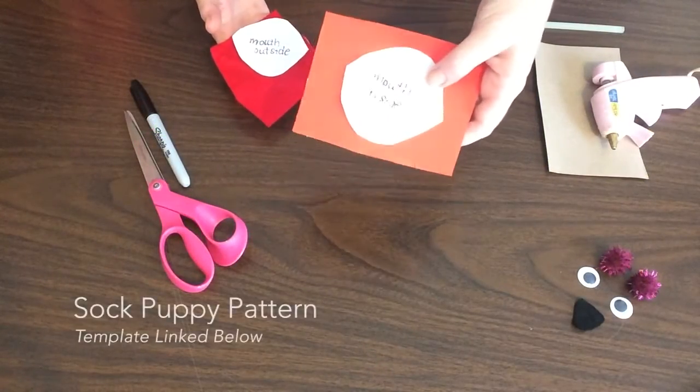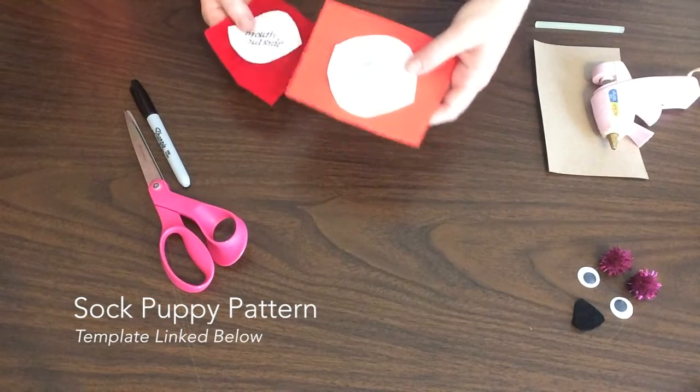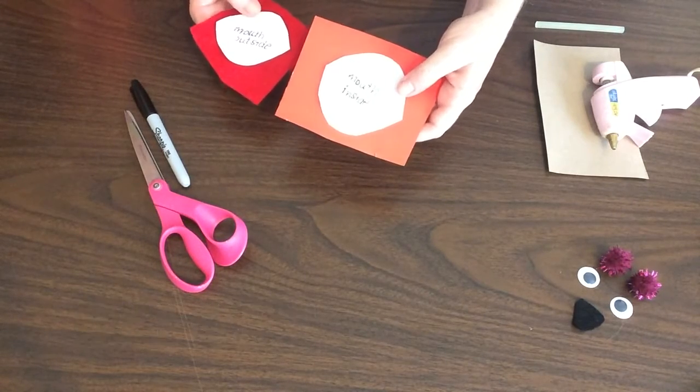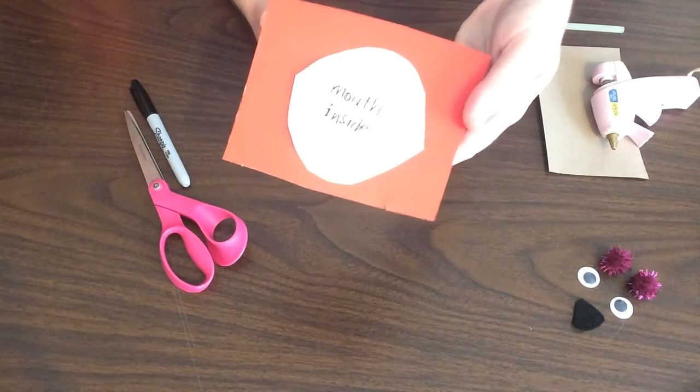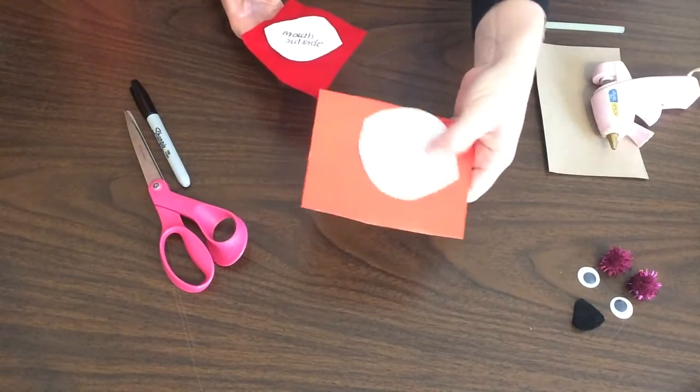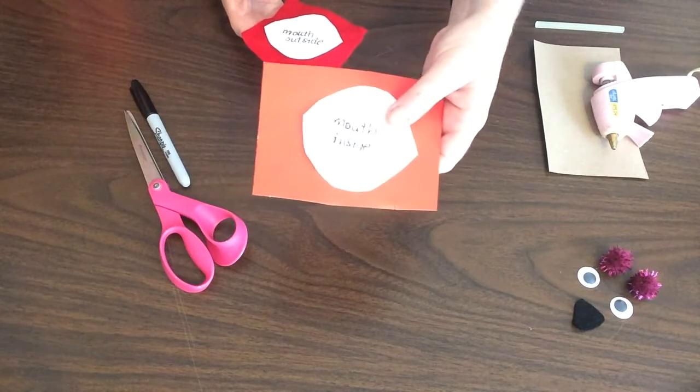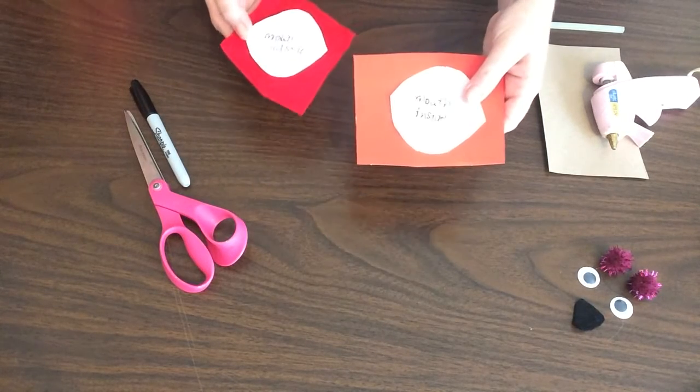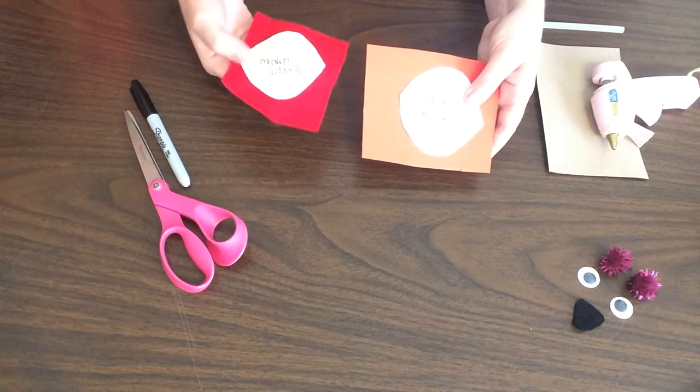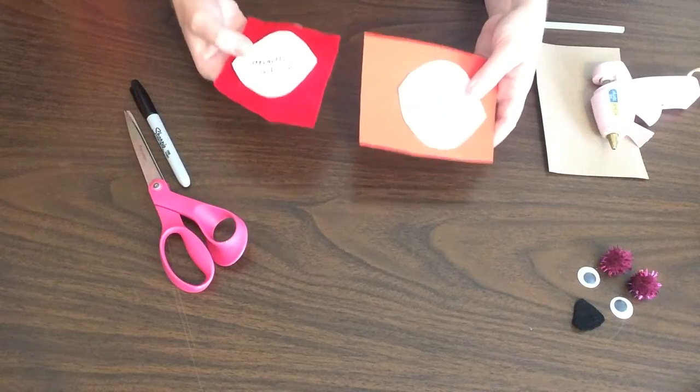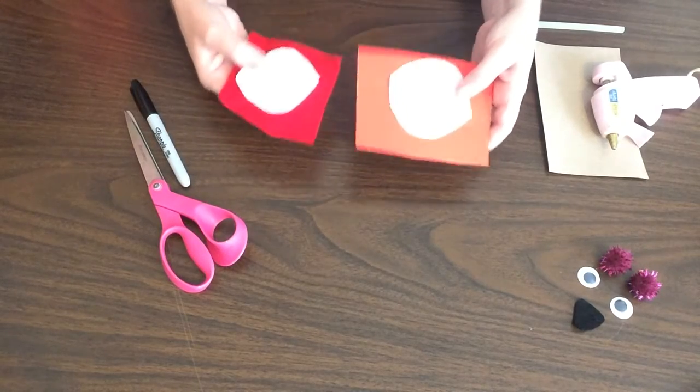Step one is to cut out your templates, your patterns for the inside and outside of the mouth. The poster board is going to be for the inside of the mouth. It's a lemon shape or an oval shape. And you'll notice the outside of the mouth is a little bit smaller. That is going to be the felt mouth. So go ahead and trace those both and cut them out.